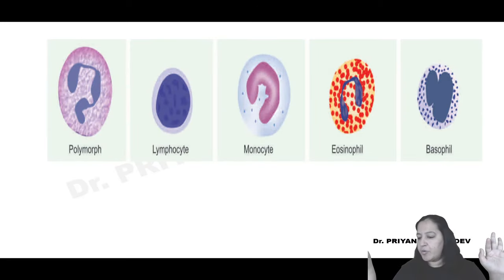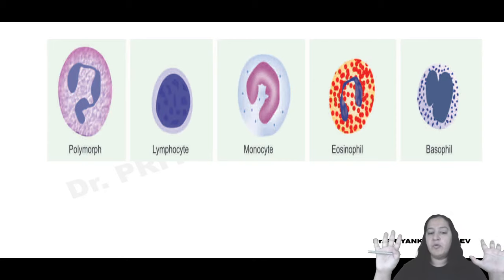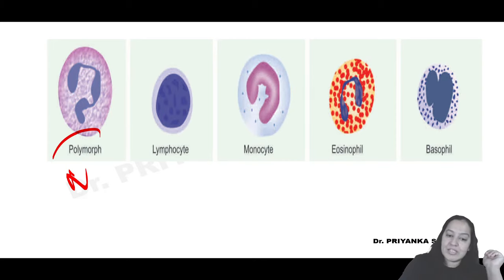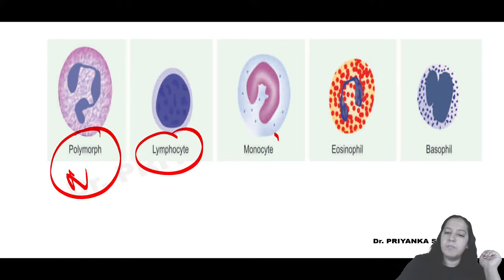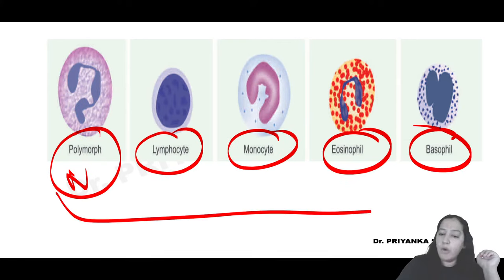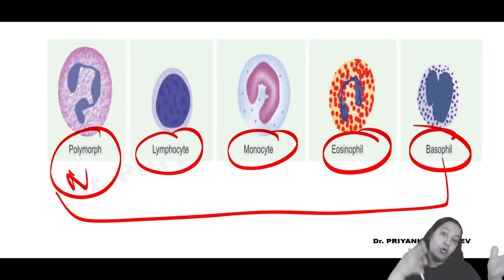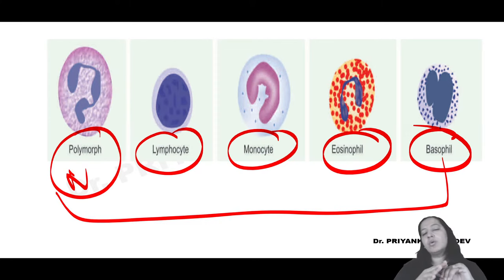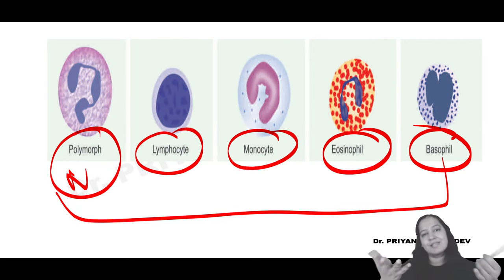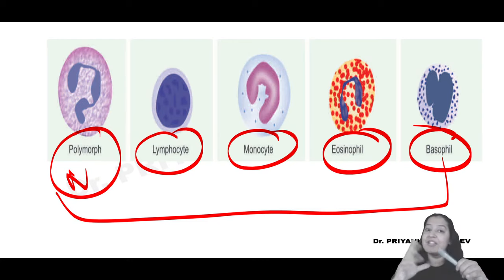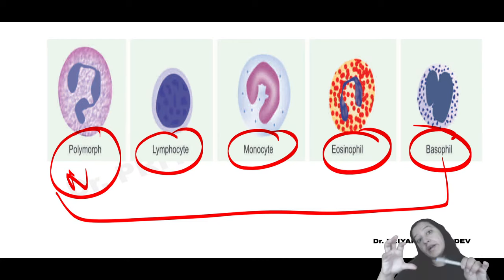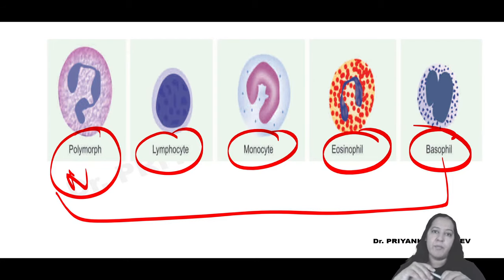I have finished explaining the five types of WBCs and how they are formed from bone marrow. Neutrophils are also known as polymorphs. Now I will teach you their tumors - leukemias and lymphomas. Does anyone know the difference between leukemia and lymphoma? Both are blood or reticuloendothelial system cancers. I will teach the classifications of leukemias and lymphomas and then start them one by one.